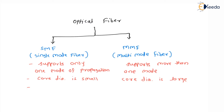What is meant by mode of propagation? Mode of propagation tells us about in how many ways we are transferring the data. Single mode of propagation means we are transferring the data in only one way, and in multi-mode we use different types of ways — more than a single way. That is the basic meaning of mode of propagation.